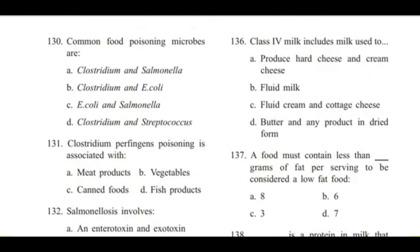Question 130: Common food poisoning microbes are — Clostridium and Salmonella, Clostridium and E. coli, E. coli and Salmonella, or Clostridium and Streptococcus? Answer is C, E. coli and Salmonella.